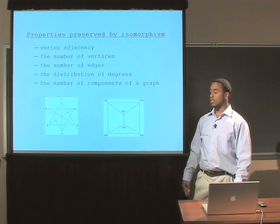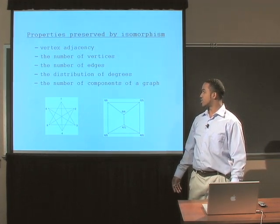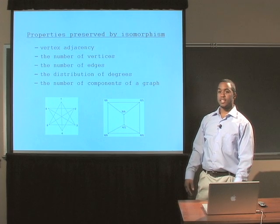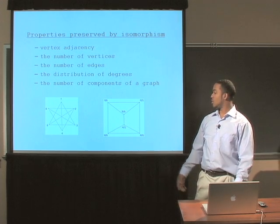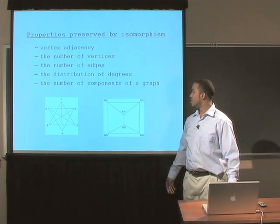We have the number of vertices: six on the left and six on the right. We have the number of edges: nine on the left and nine on the right.